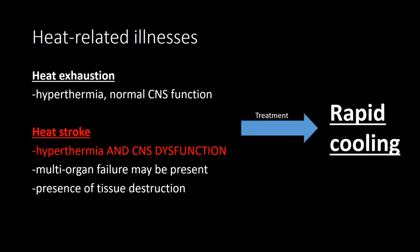There are two heat-related illnesses for the emergency medicine shelf exam. Heat exhaustion is hyperthermia with normal central nervous system function; CNS dysfunction will rapidly correct with cooling and rest. Heat stroke involves hyperthermia usually greater than 40°C (104°F) with central nervous system dysfunction including headache, disorientation, altered mental status, seizure, and coma. These patients often have multi-organ failure such as shock and ARDS, with evidence of tissue destruction including high CK levels and signs of rhabdomyolysis. AST is the most sensitive lab finding for tissue destruction.